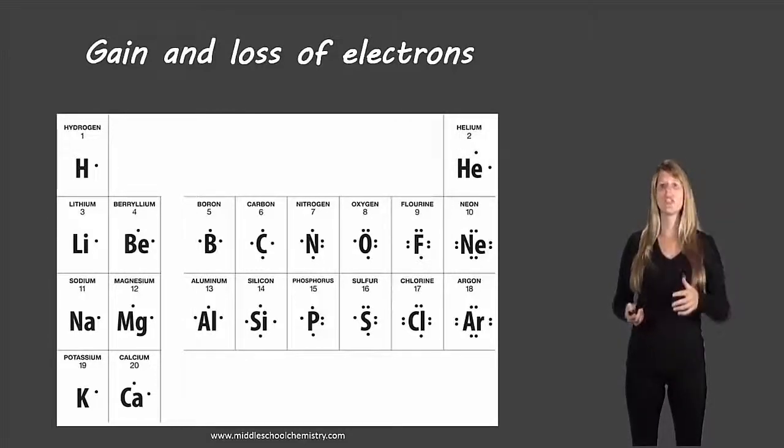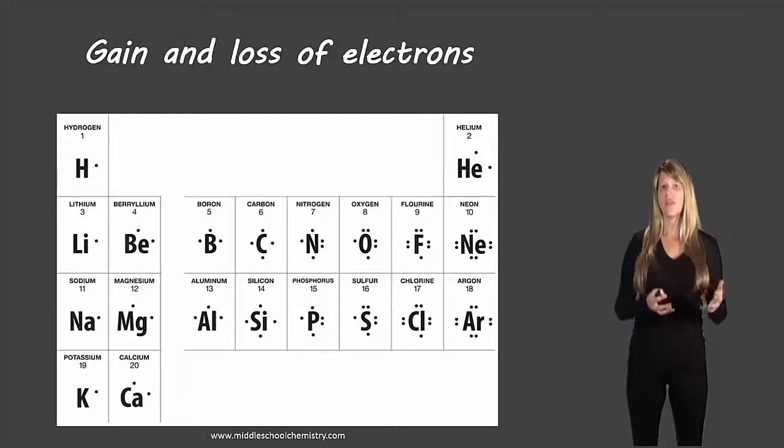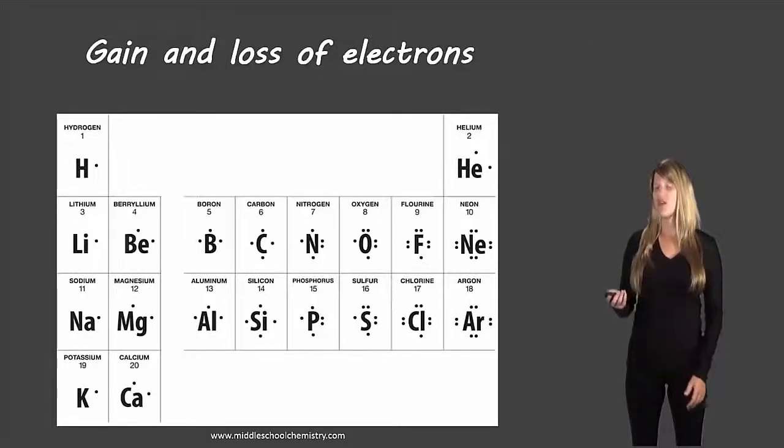Now it's much simpler to either gain or lose fewer electrons. So it's much simpler if there's fewer valence electrons to lose those electrons compared to gaining a lot of electrons. And if there are many valence electrons, it's simpler to gain some valence electrons than to lose all of the electrons that it has.